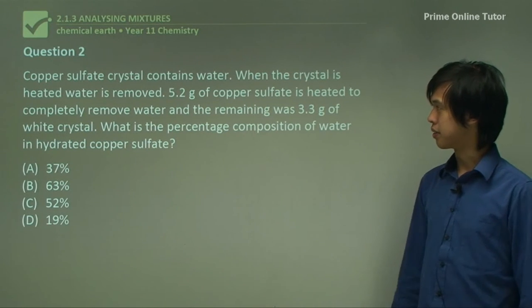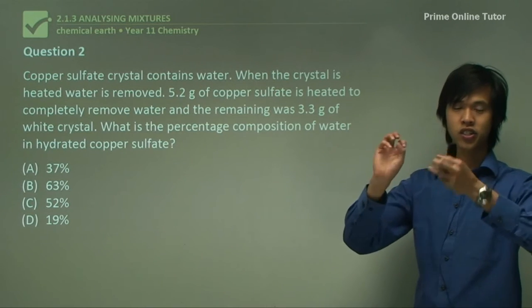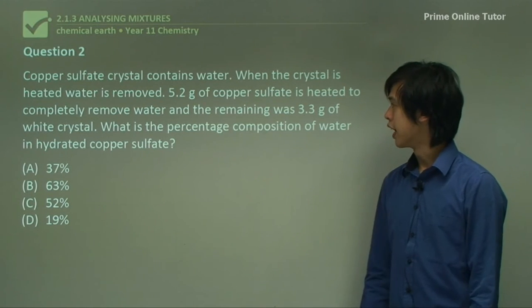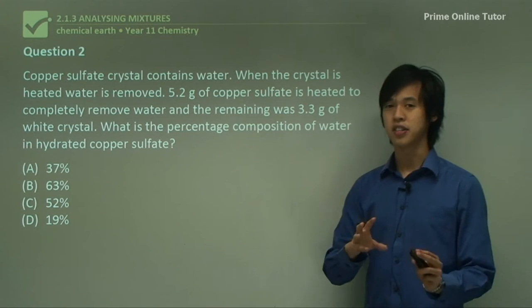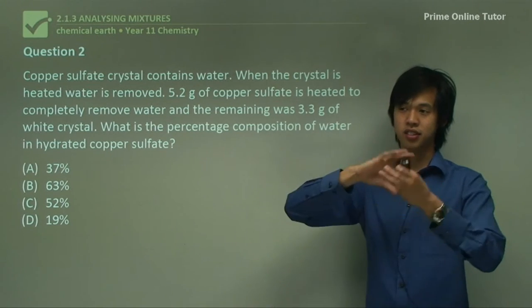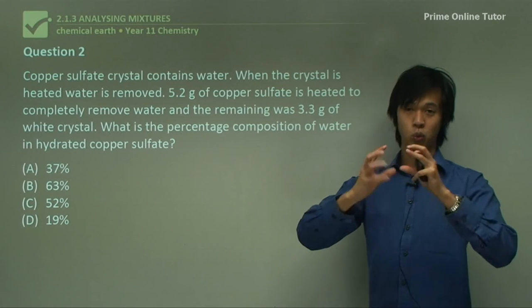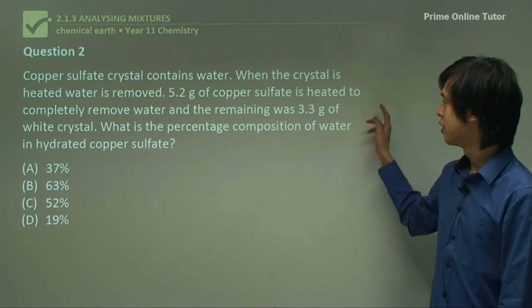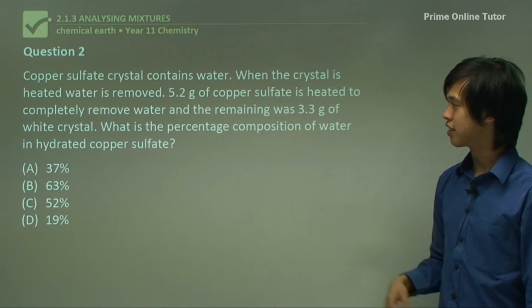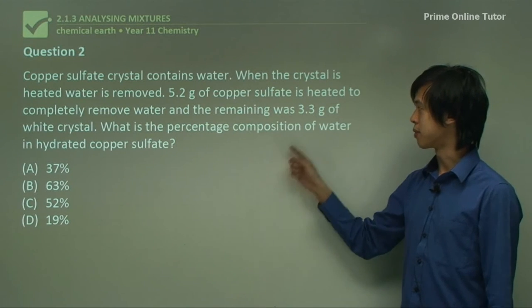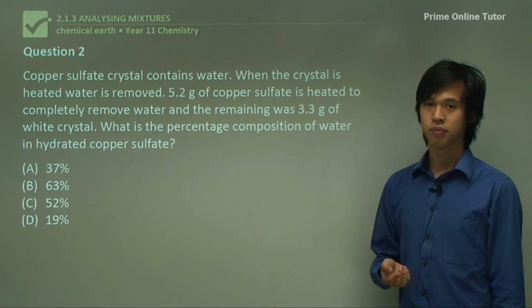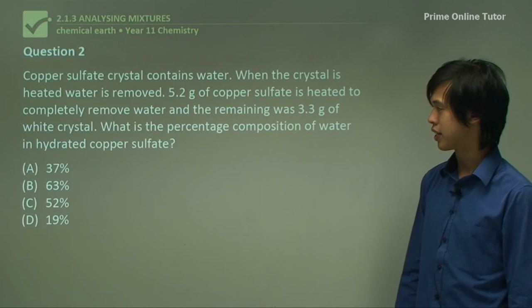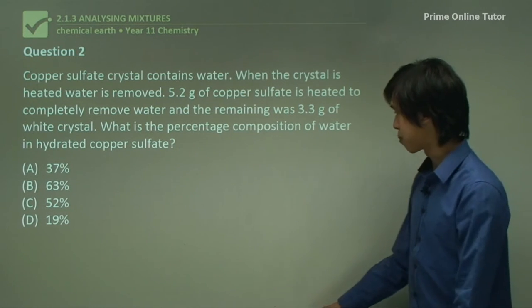So copper sulfate crystal contains water. When you have a crystal of copper sulfate, there's actually water inside that crystal bonded with the copper sulfate. And when the crystal is heated, water is removed. So when we heat the crystal, we actually emit water. So within the crystal of copper sulfate, that blue crystal, there's water. And when you heat that crystal, it emits water, which gives you just copper sulfate. So 5.2 grams of copper sulfate is heated to completely remove the water, and the remaining mass was 3.3 grams of white crystal. So the crystal is actually white when there's no water in it. What is the percentage composition of water in hydrated copper sulfate?